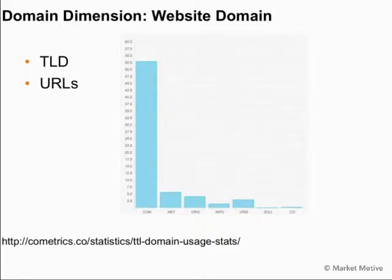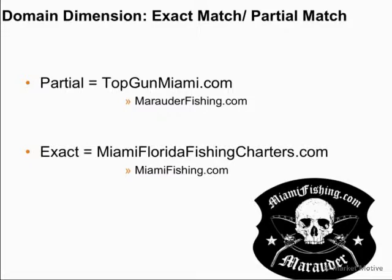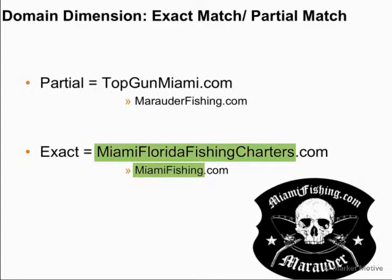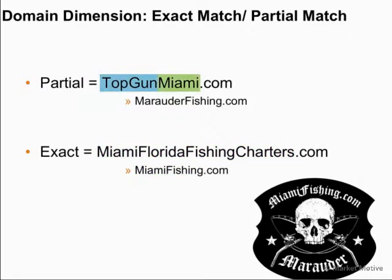The most common URL extensions are .com, .net, and .org, with .info and .edu as well. Most sites are .com — that is their top-level domain extension. This plays a role in the domain dimension with exact match and partial match domains. An example of an exact match domain would be 'Miami Florida Fishing Charters' — a commercial generic phrase. A partial match domain like TopGunMiami or MarauderFishing.com includes only one of the two keywords, and therefore is a partial match domain.